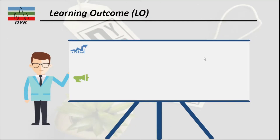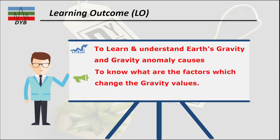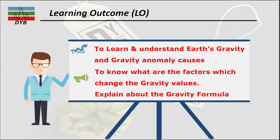Before starting the lecture, we have learning outcomes. The first objective is to learn and understand Earth gravity and gravity anomaly causes. The second objective is to know what factors change the value of gravity with different latitude, longitude, or place on Earth. The third objective is to explain the gravity formula and how we calculate it.